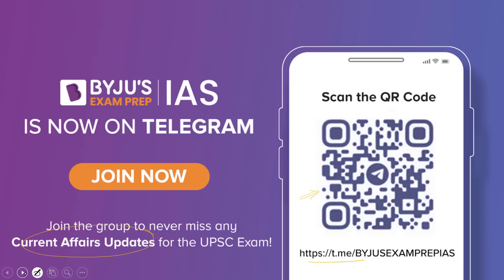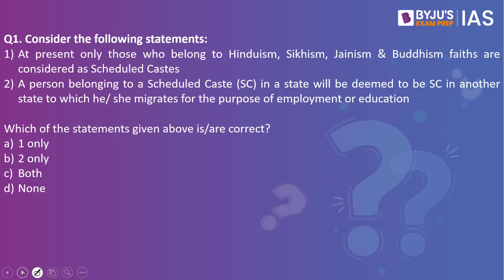Let's look into the first question. Consider the following statements. Statement one: at present, only those who belong to Hinduism, Sikhism, Jainism, and Buddhism faiths are considered a Scheduled Caste. Statement two: a person belonging to a Scheduled Caste in a state will be deemed to be an SC in another state to which he or she migrates for employment or education. Which of the statements is correct? The answer is none.